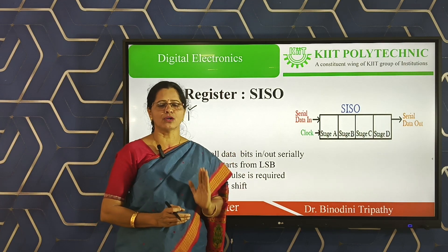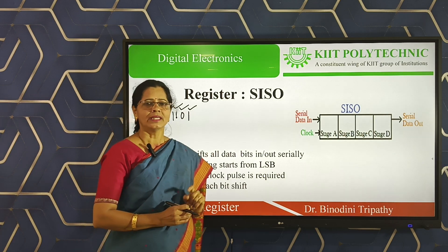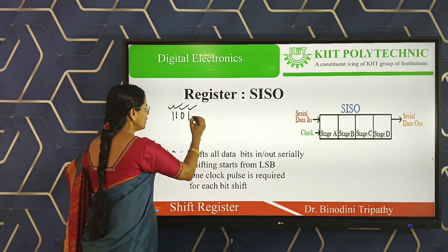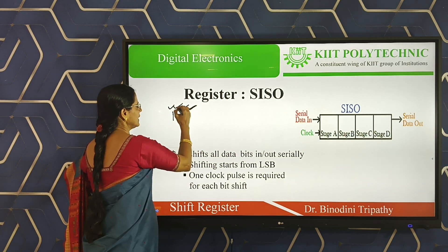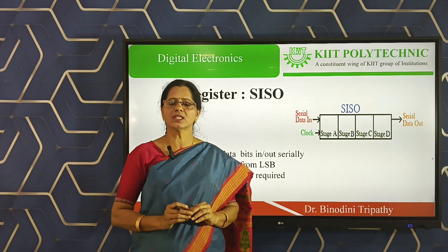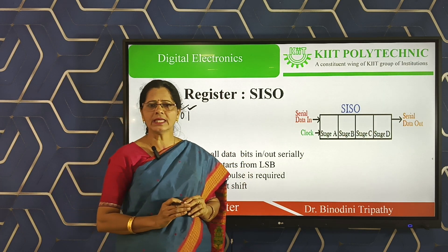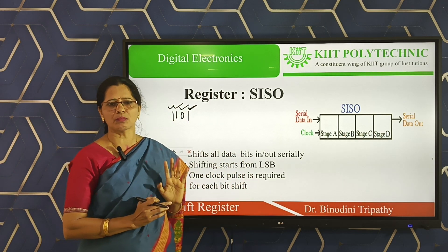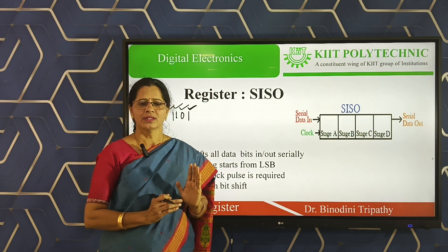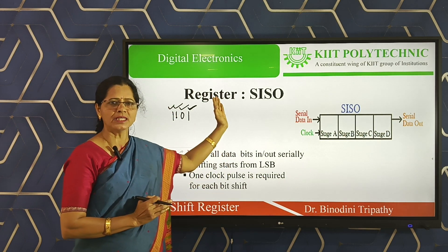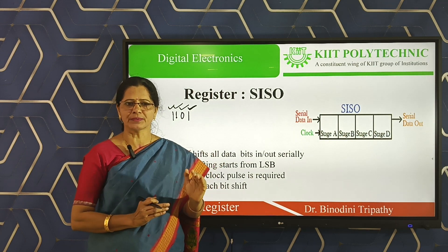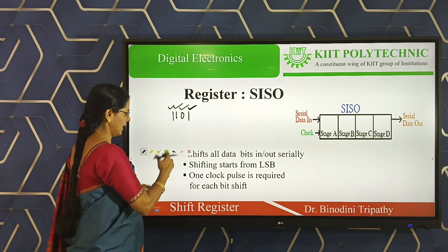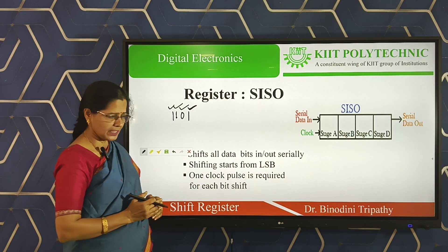SISO means serially loading and similarly serially unloading. After loading the 4-bit data, if you want to unload, you start from LSB — first bit, then second, then third, then fourth. During unloading, bits are also shifted out serially one bit after another. For each bit shifting out, one clock pulse is required. So for 4-bit shifting out, four clock pulses are required. Overall, total clock pulses for a 4-bit SISO is 4 plus 4 equals 8. For an 8-bit register, 5 pulses for shifting in and 5 for shifting out.